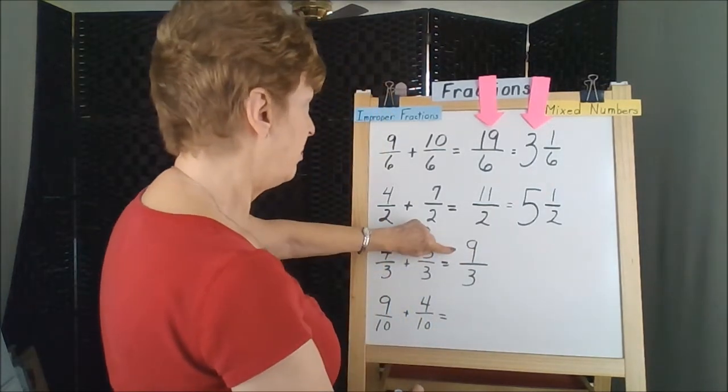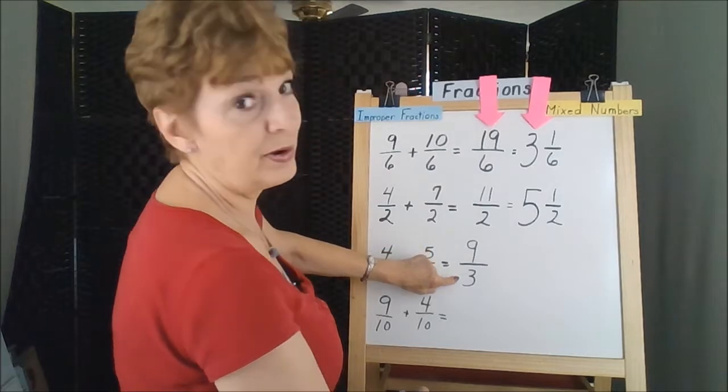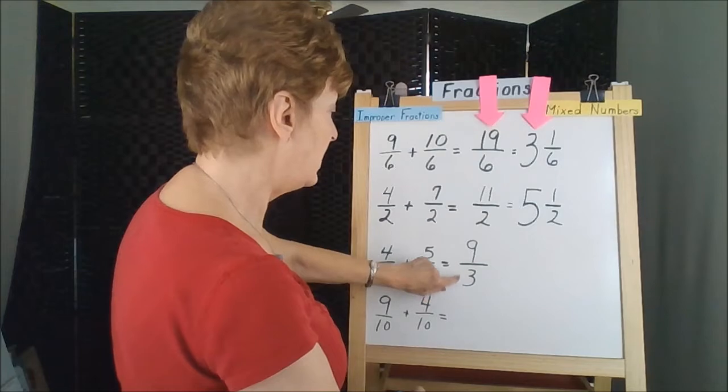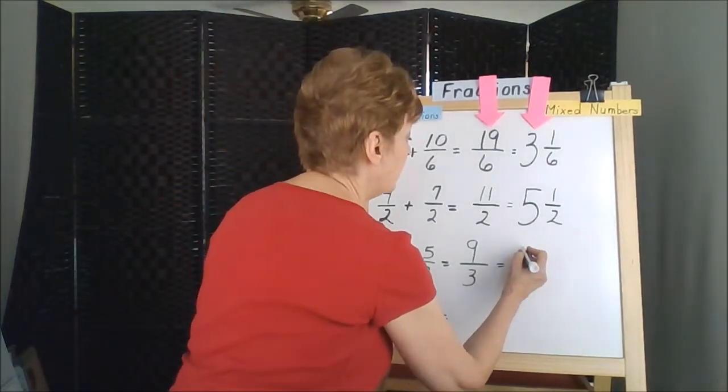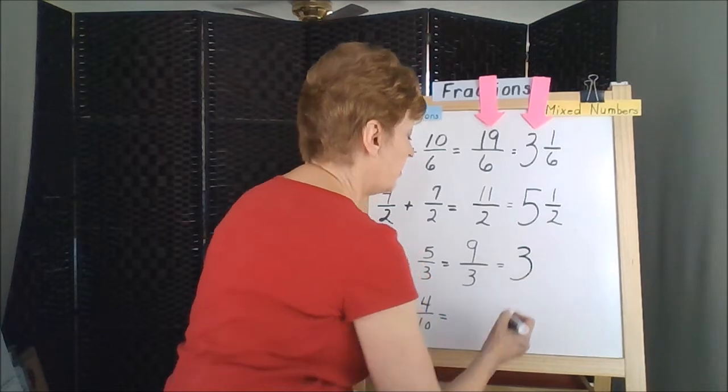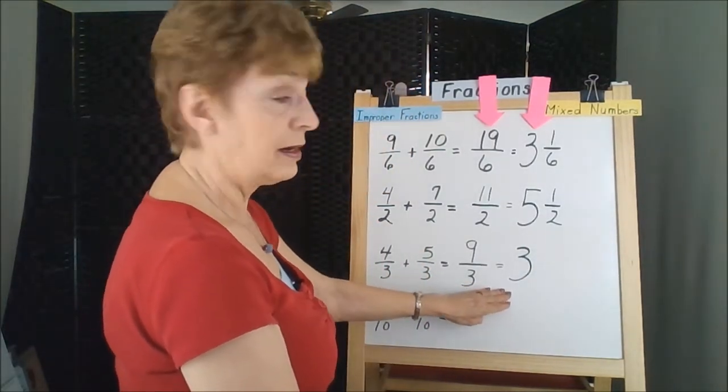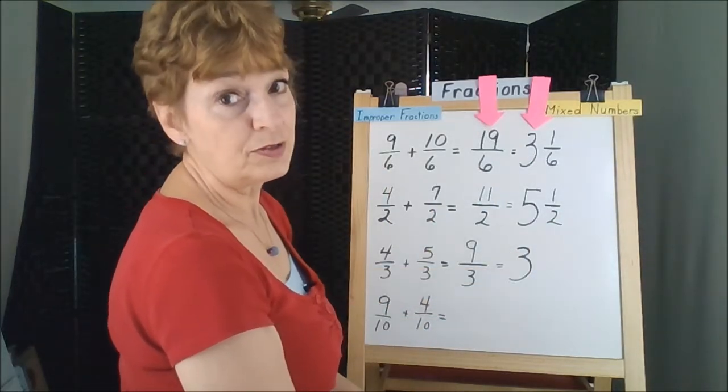That makes an improper fraction. 9 is bigger than 3, so we can divide. How many times does 3 divide into 9? It goes in three times because 3 times 3 is 9, so we have three whole circles with no pieces left over.